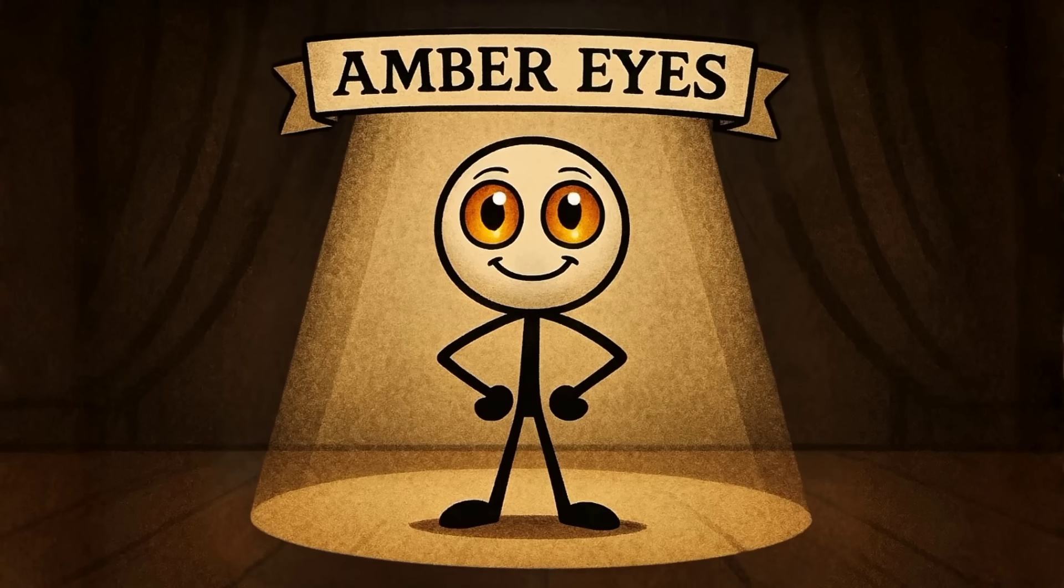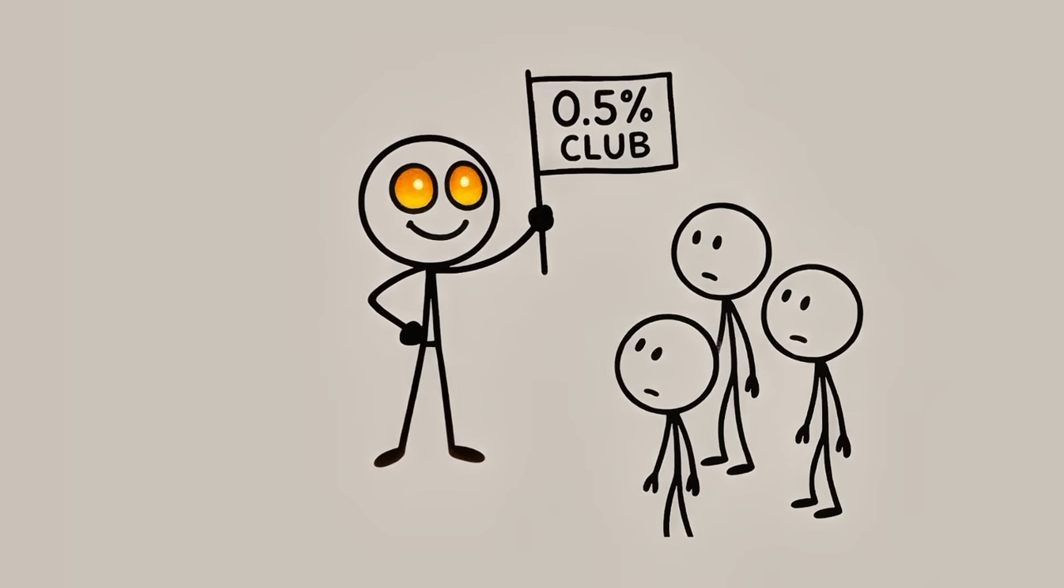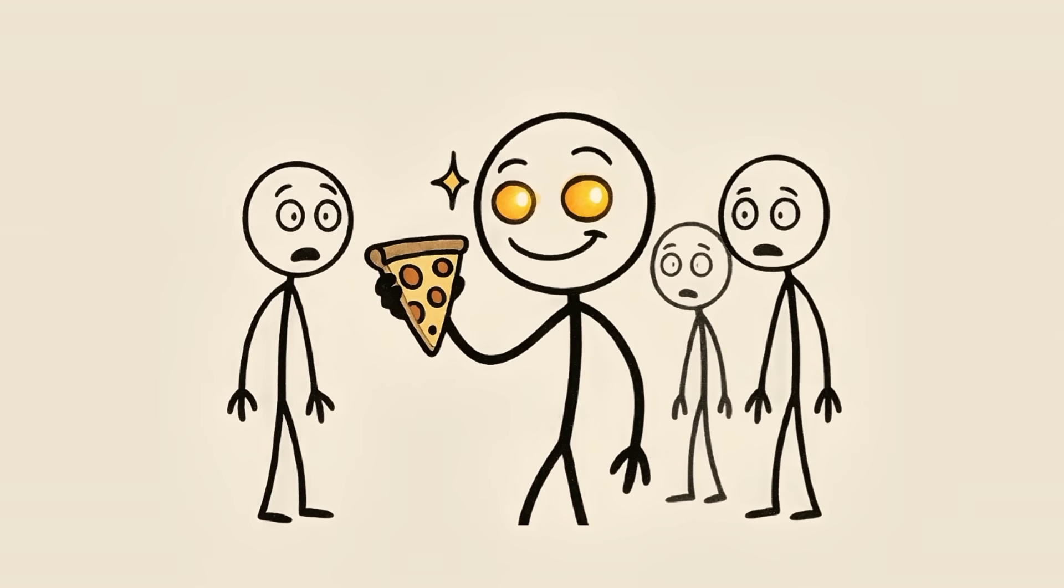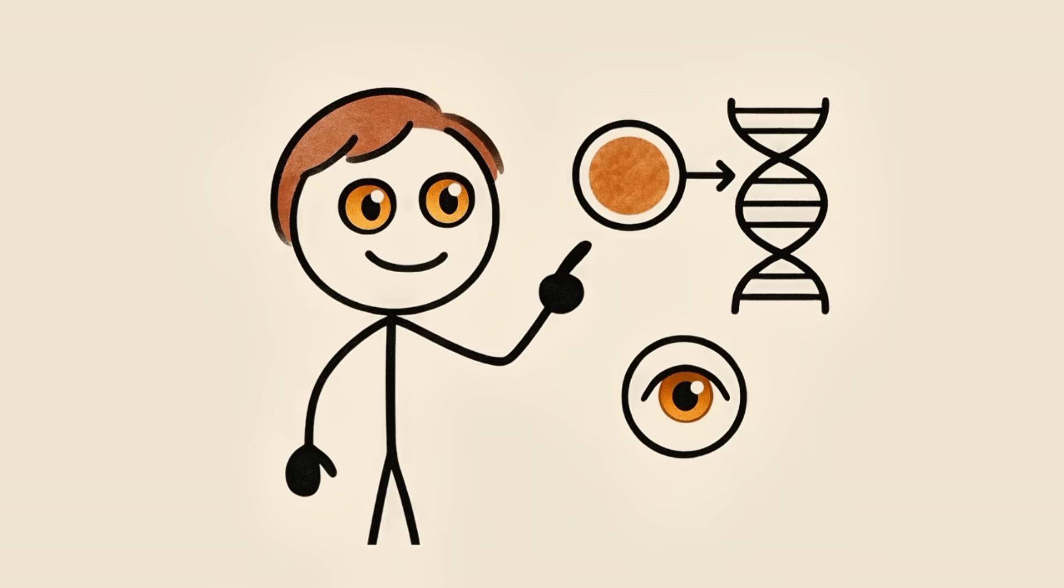6. Amber eyes. The golden hour. Amber eyes. Warm, golden, and super rare. Only about 0.5% of the global population has them. That's rarer than winning a free pizza from a vending machine. The color comes from a pigment called lipochrome, pheomelanin. The same stuff that gives red hair its color.